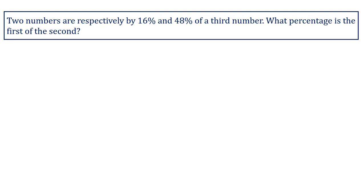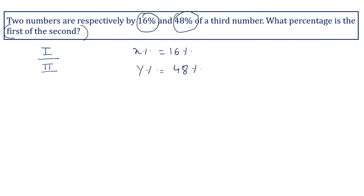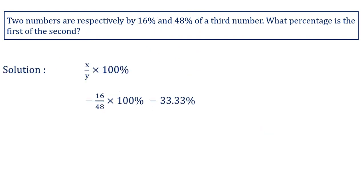Two numbers are respectively 16 percent and 48 percent of a third number. What percentage is the first of the second? First is compared with second, so put first in the numerator and second in the denominator. x percent equals 16 percent and y percent equals 48 percent. Using the formula x upon y into 100 percent: 16 upon 48 into 100 percent gives 33.33 percent. So 33.33 percent is the first of the second.